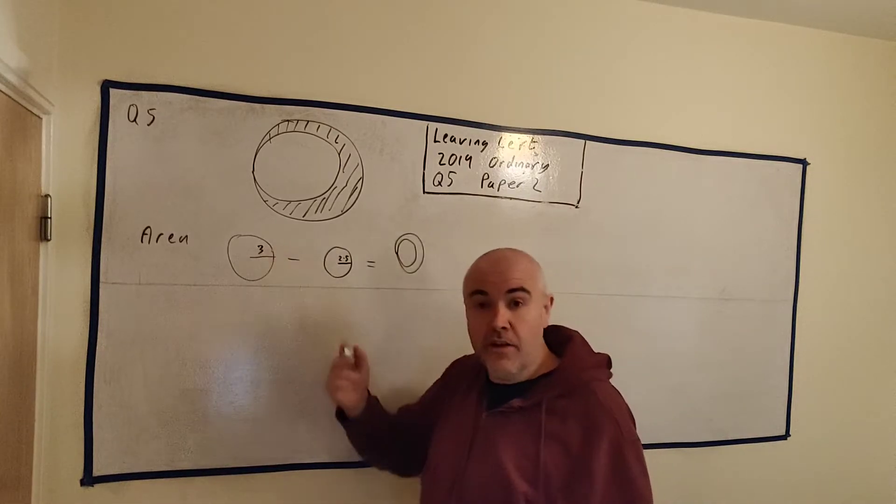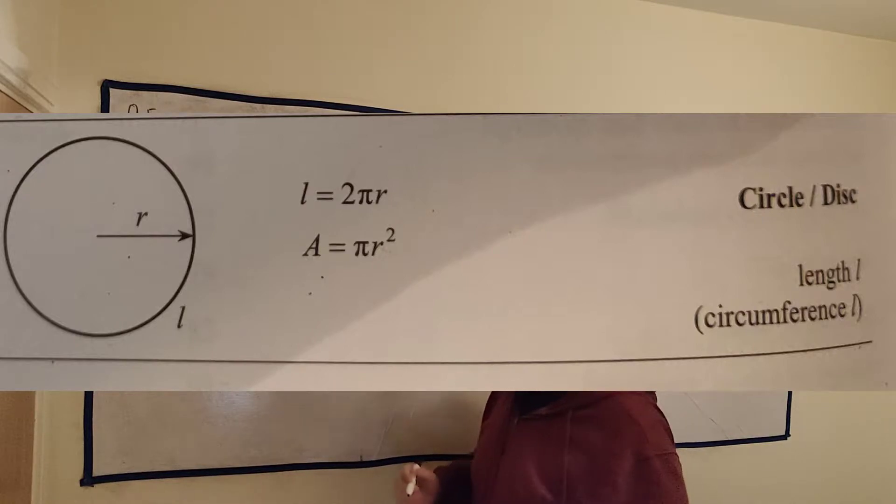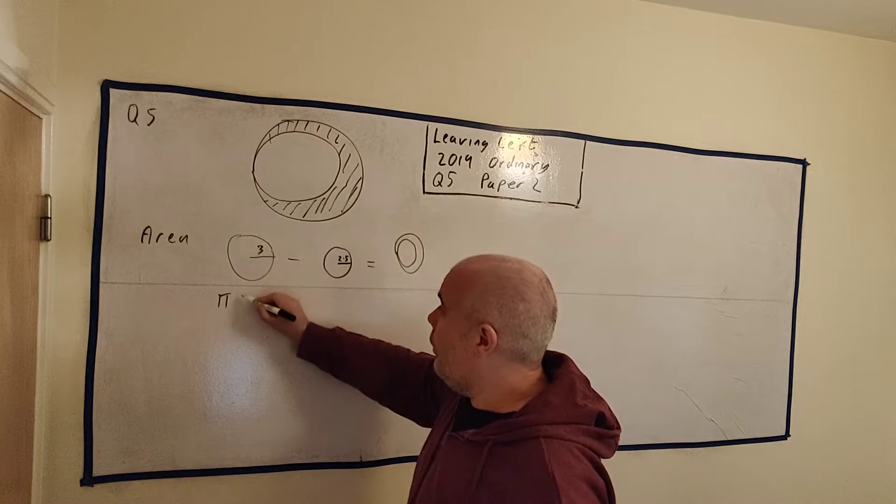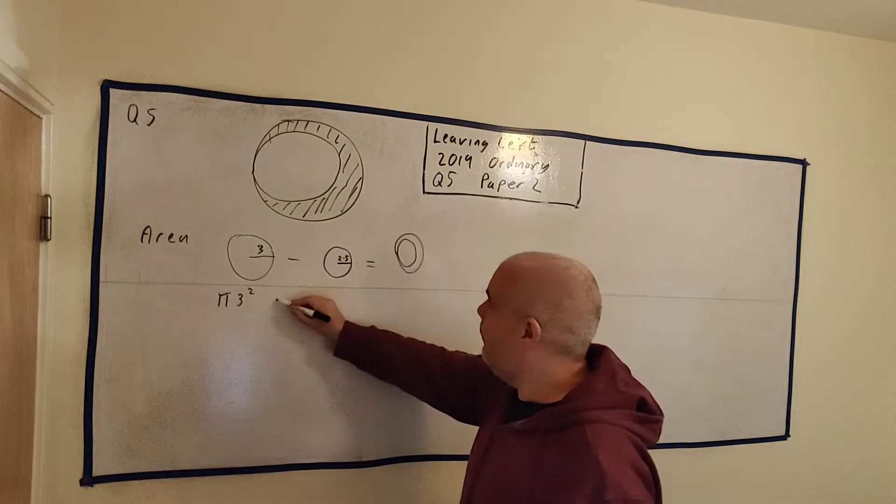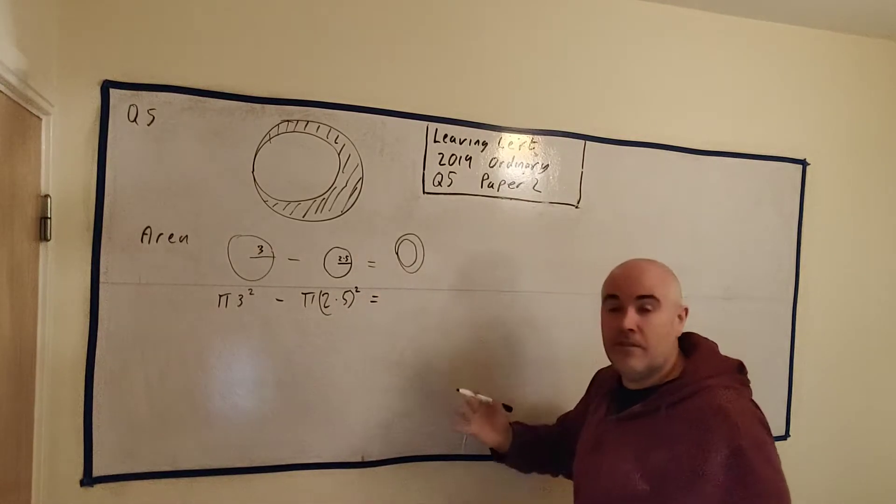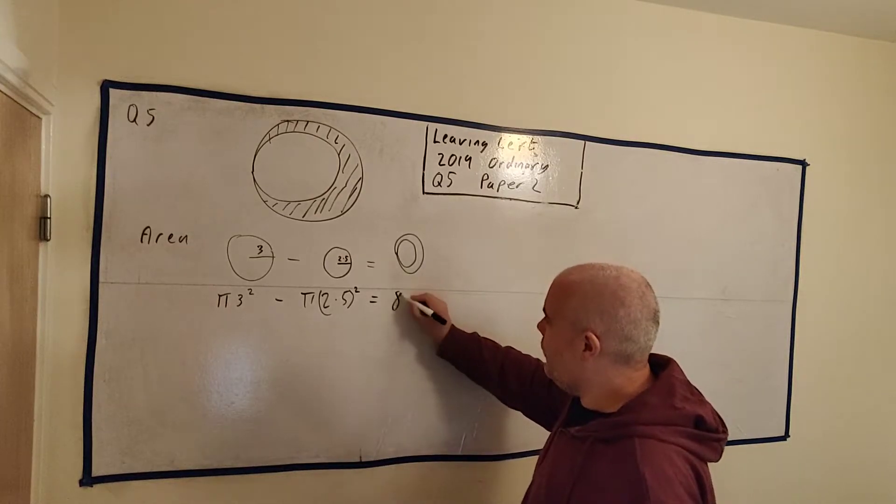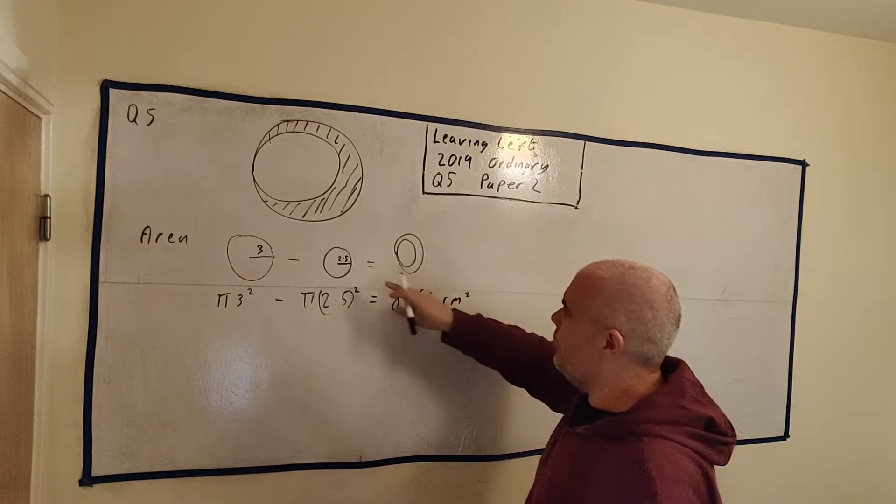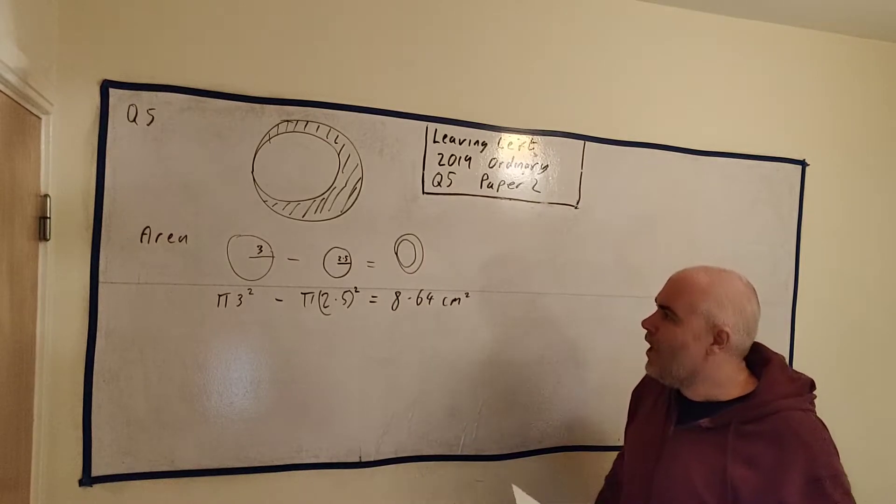How do we do that? The area for a circle is, it's in your formula tables, I'll put it up on screen now. But it is πr². So that's πr is 3, so πr² is π(3²) minus π(2.5²) equals, you can simply put that into a calculator, and we will get, corrected two decimal places, we'll get 8.64, and that's centimeters squared because they gave us these guys in centimeters.